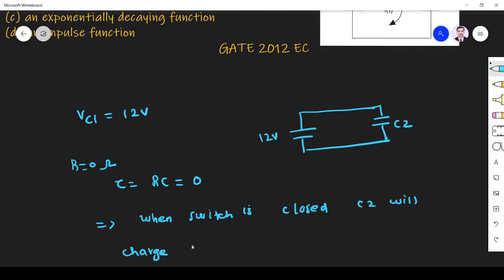The capacitor will take 0 seconds to charge. C2 will get charged. And this indicates the voltage is changing suddenly to 12 volt. This implies sudden change in voltage.